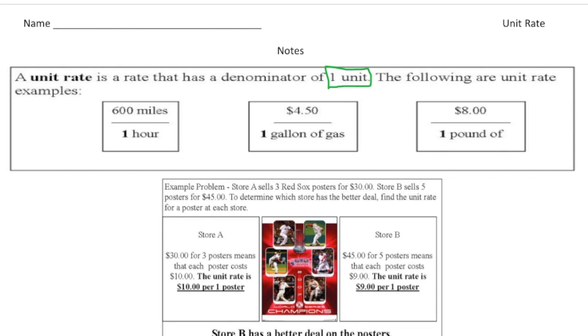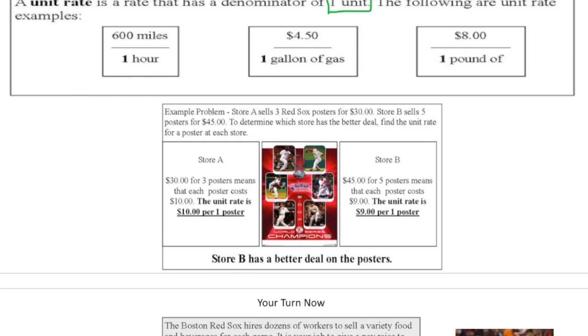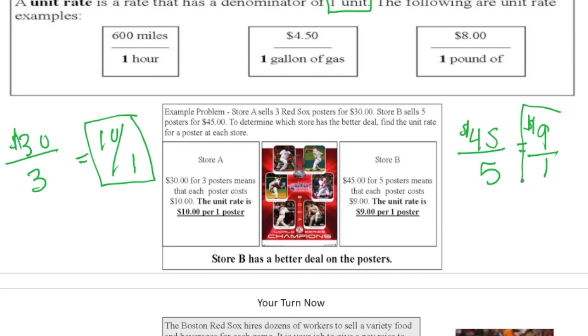So unit rates can actually save you money. Here's the problem. Store A sells three Red Sox posters for $30 and store B sells five posters for $45. To determine which store has the better deal, find the unit rate. So the way you do that is you divide. So here we get three posters for 30 bucks. I'm going to write down the ratio, 30 bucks for three posters. And 30 divided by three ends up being 10 to one. And now because that's a one, we know it's a unit rate. So it's $10 per poster. Then over here, we know that for $45, I can get five posters and 45 divided by five is nine. So it's $9 for every one poster. So it's cheaper to go to store B to buy the posters because they're just $9 a piece.